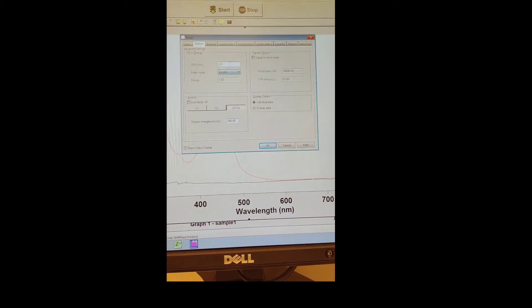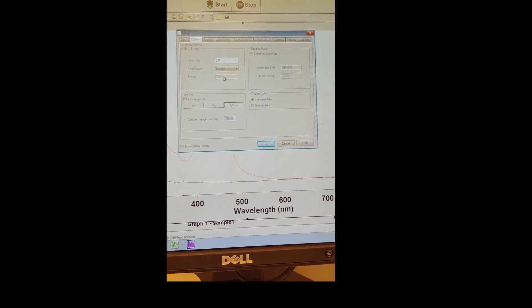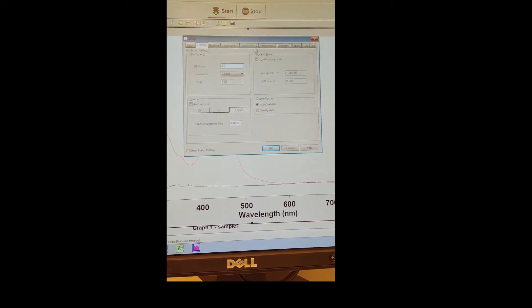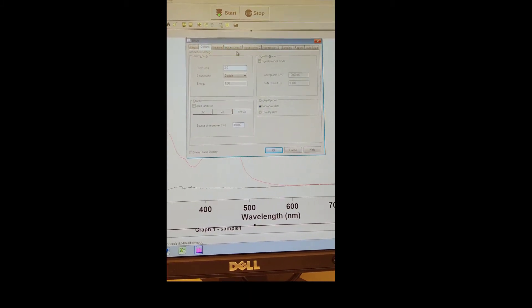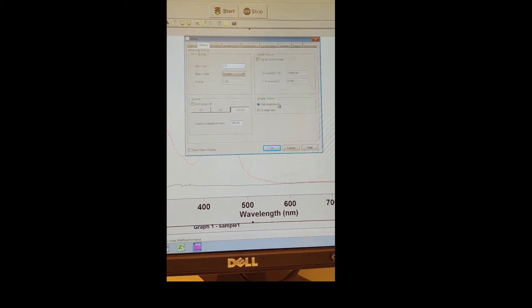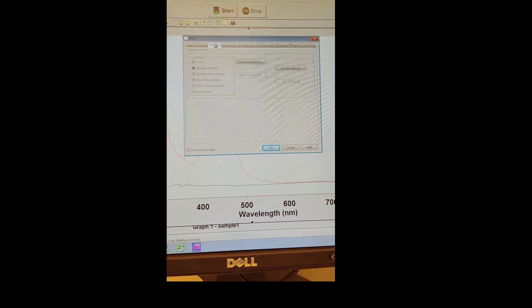Under the Options tab, make sure 2 is in that field right there, and make sure you're in double beam mode. Make sure Auto Lamps Off is not selected. Make sure Signal to Noise mode is not selected. Under Display Options, I like to select individual data because that makes the spectrums easier to look at.